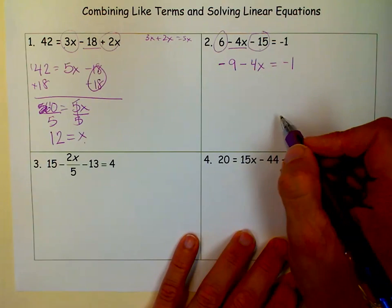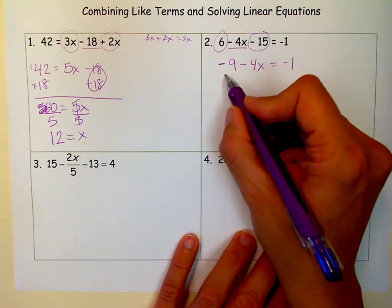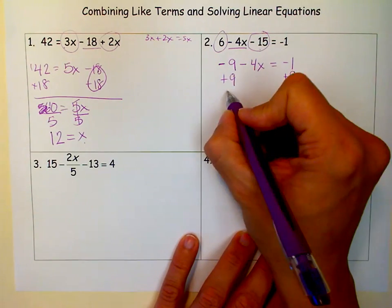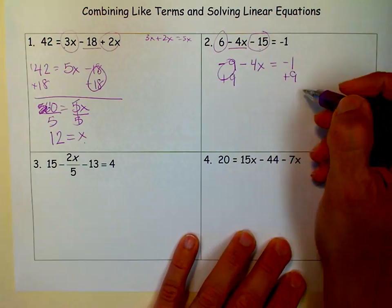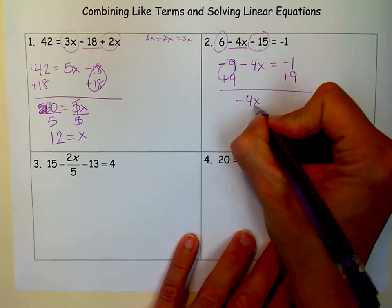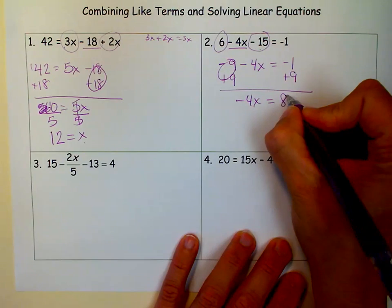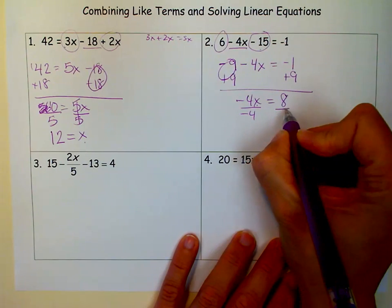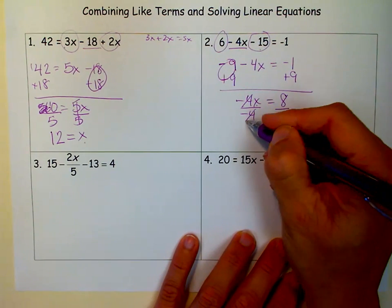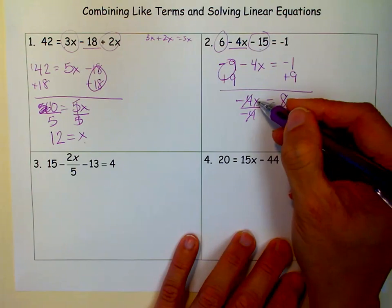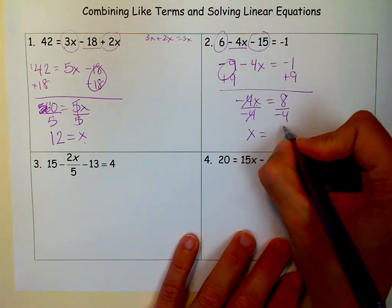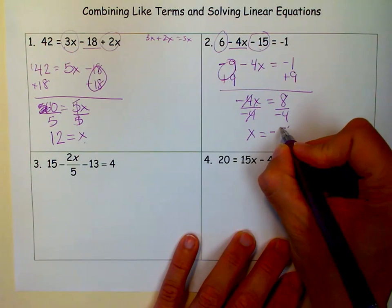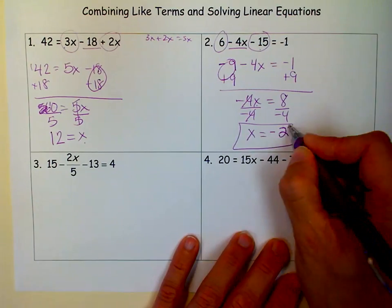And so again, now I have a two-step equation. To get rid of the constant term, I'm going to add 9. I'm doing the opposite of what was happening. It was a minus 9, I'm going to add 9. Negative 4x equals 8, because negative 1 plus 9 is 8. And now, to get x alone, I have to do the opposite of multiplying by negative 4, which is dividing by negative 4. Negative 4 divided by negative 4 is 1. 1 times x is x. 8 divided by negative 4, a positive divided by negative is a negative, and 8 divided by 4 is 2. x equals negative 2. Like I said, you can check that one on your own and see if I'm right.